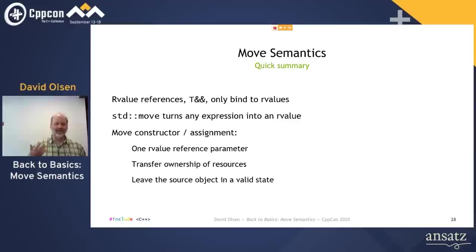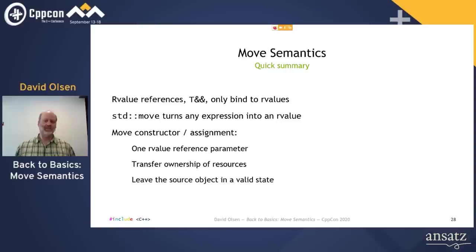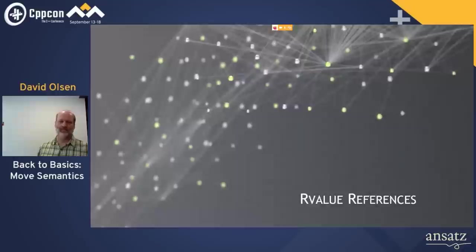Here's a very quick summary of how move semantics work, which is also the outline for the rest of the talk. R-value references only bind to R-values. std::move turns any expression into an R-value and is used to indicate that you want something to be moved from. Move constructors and move assignment operators, which have an R-value reference parameter, transfer ownership of resources from one object to another.